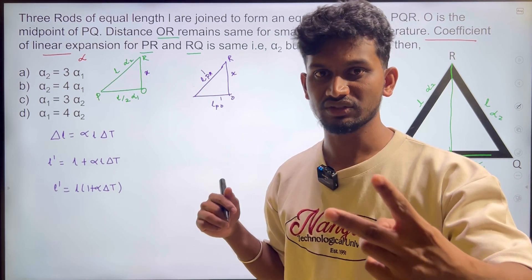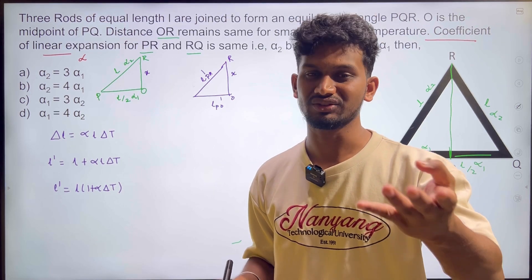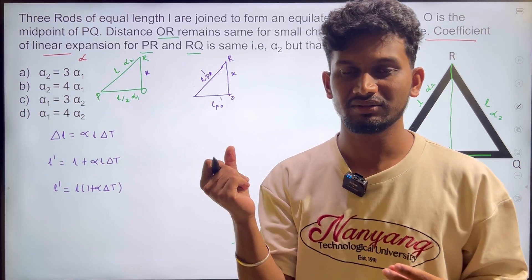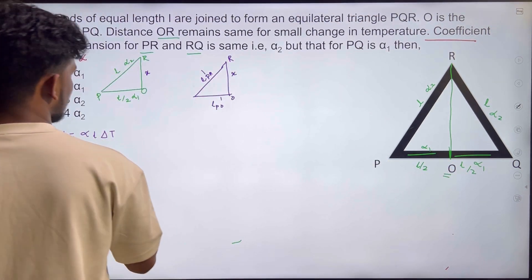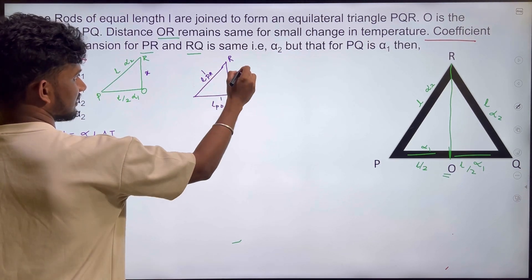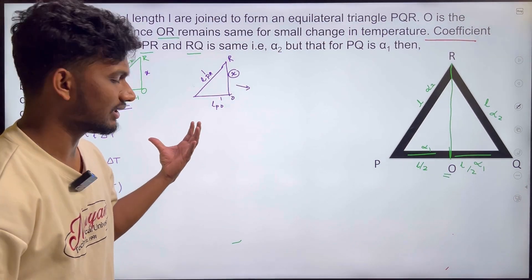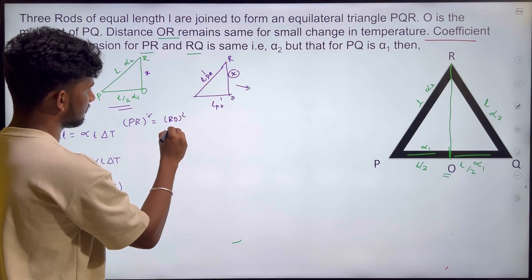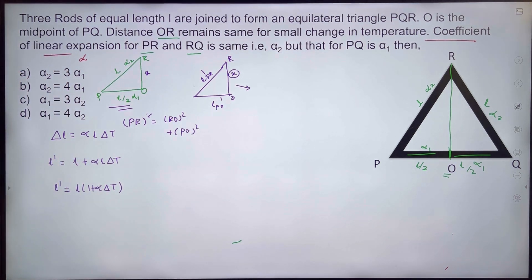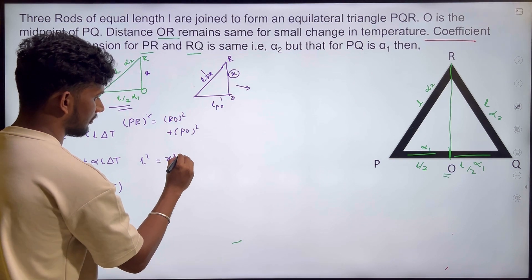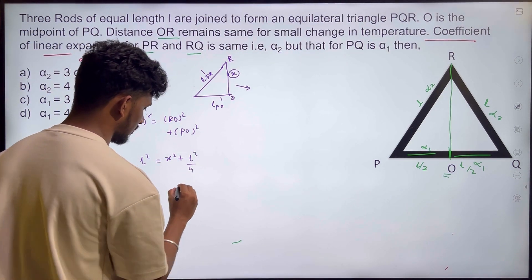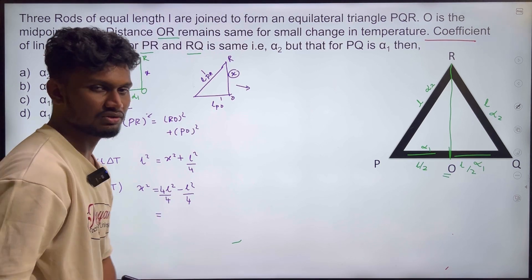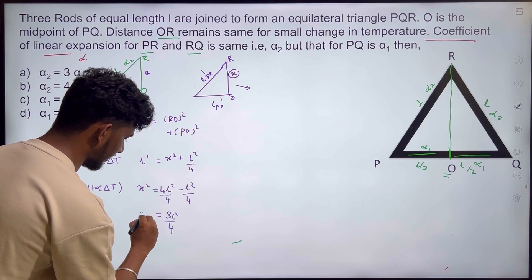The first solution is a traditional solution — we apply it normally. The second solution is a higher-level method, but you can follow it in about 1 minute 30 seconds. Using Pythagoras' theorem: PR² = RO² + PO², so L² = x² + L²/4, therefore x² = L² − L²/4 = 3L²/4.